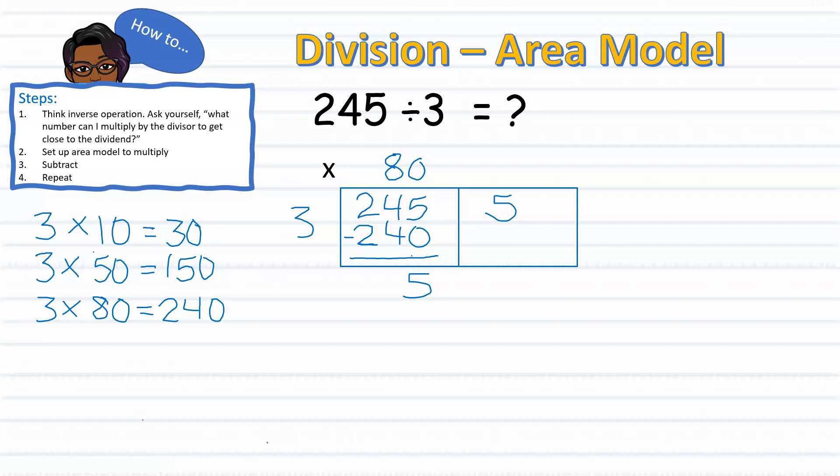To divide 5 by 3, I must extend my area model by including an additional box. So now I will ask myself, what number times 3 gets me close to 5? And since I know that 1 times 3 gives me 3, I will write my 1 above my dividend of 5 and then multiply. 1 times 3 gives me 3. Now I'm ready to move on to the next step, which is subtraction. 5 minus 3 equals 2.